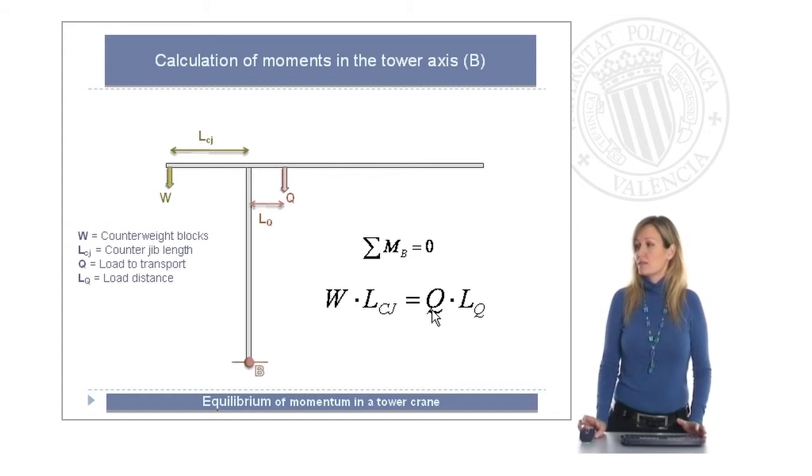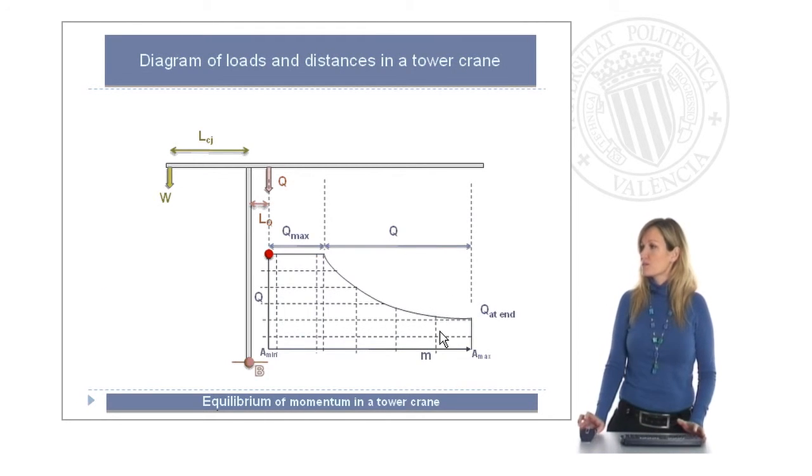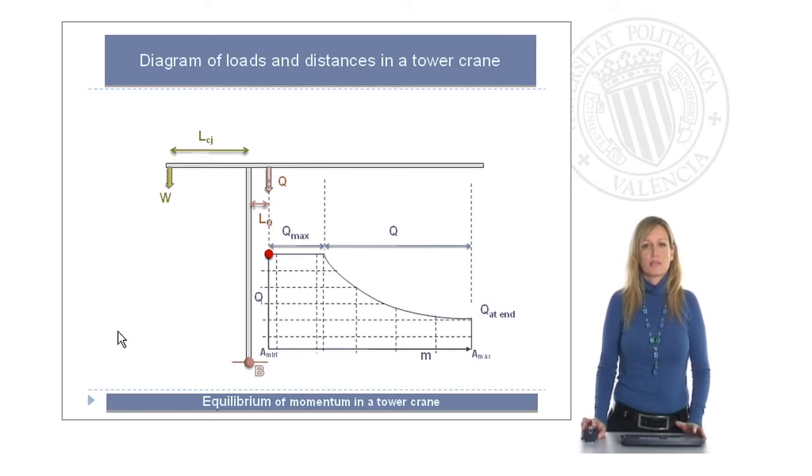And this means that the value of this product, load multiplied by load distance, has to have also a constant value. We can represent this very clearly in the diagram of load and distances in a tower crane.